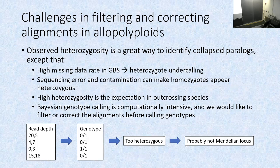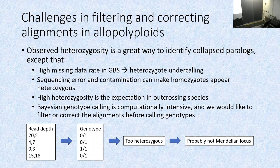Observed heterozygosity is a good way to identify collapsed paralogues, but there are issues — lots of missing data and undersampling in GBS means you might not sample both paralogues. There are other technical issues like sequencing error that can make a homozygote look heterozygous. And with an outcrossing species, it's not straightforward to automatically be suspicious of heterozygosity. Also, Bayesian genotype calling can be computationally intensive, so it would be nice to filter before doing that rather than after.